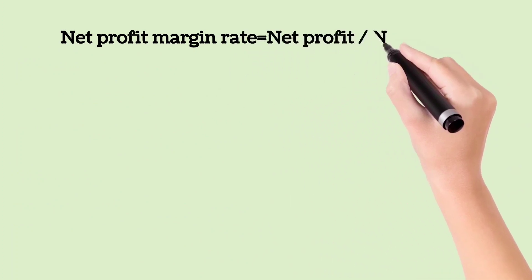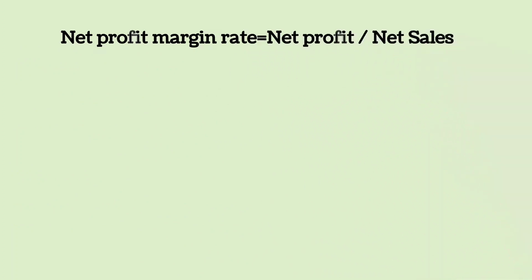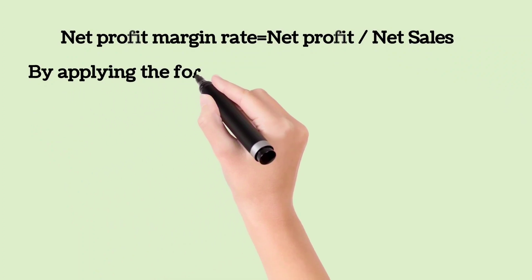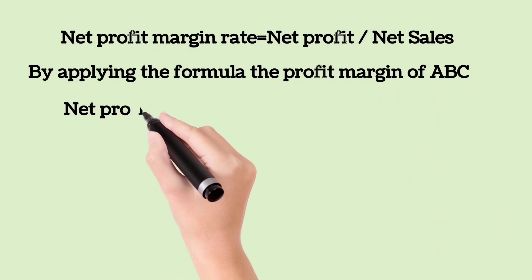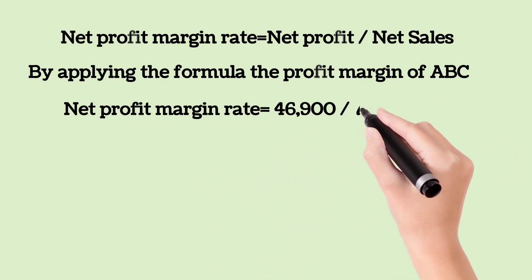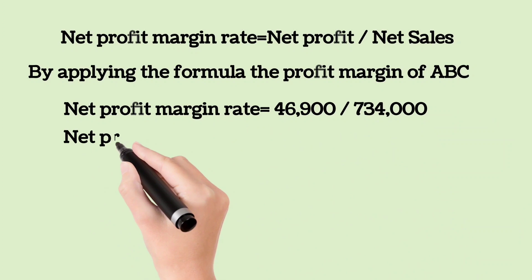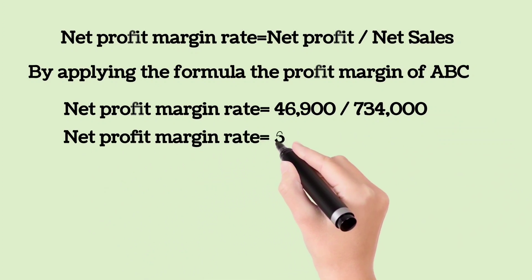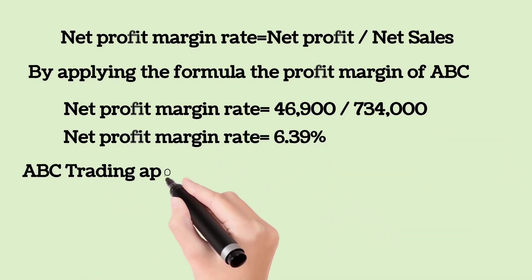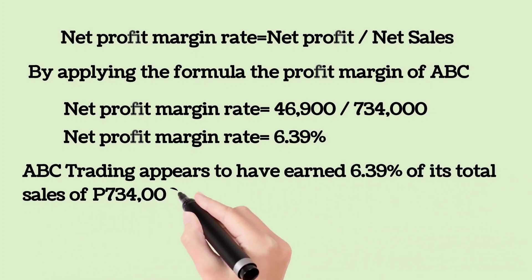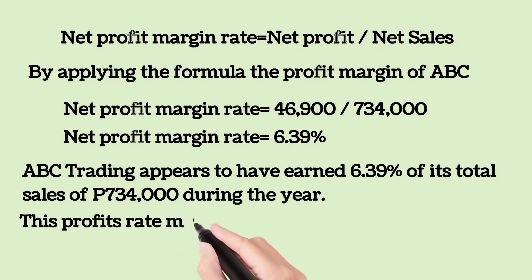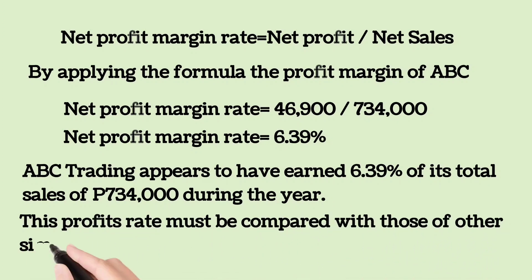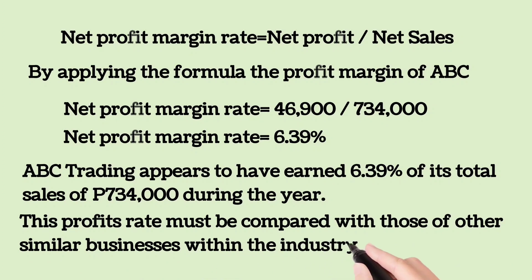Net Profit Margin Rate is equal to Net Profit divided by Net Sales. By applying the formula, the Net Profit Margin Rate of ABC Trading equals $46,900 divided by $734,000, which equals 6.39%. ABC Trading appears to have earned 6.39% of its total sales of $734,000 during the year. This profit rate must be compared with those of other similar businesses within the industry.